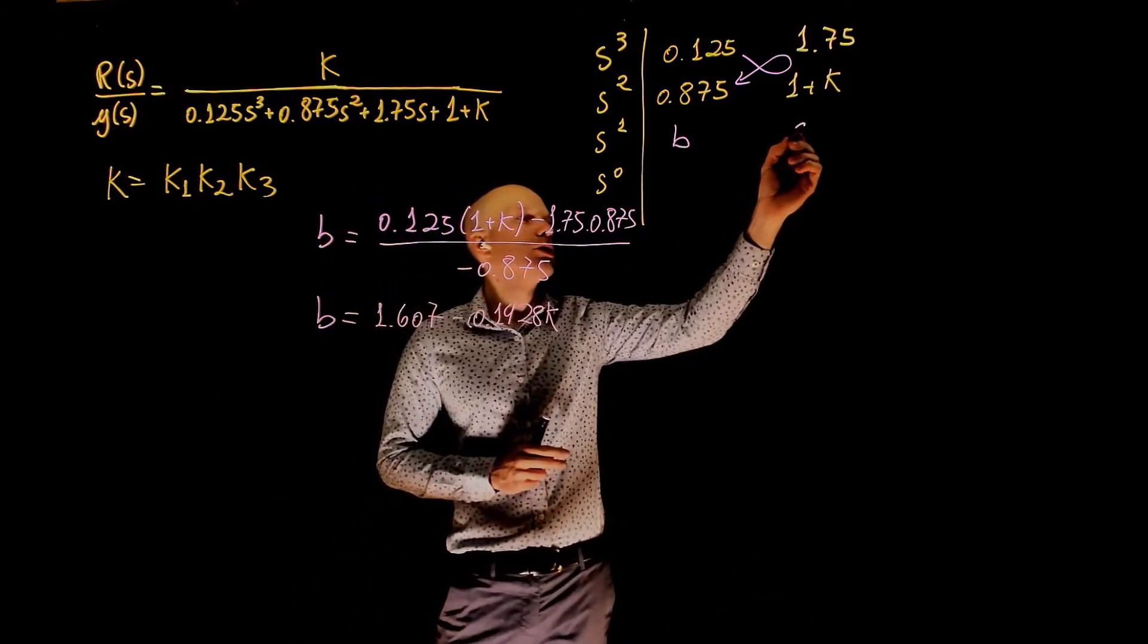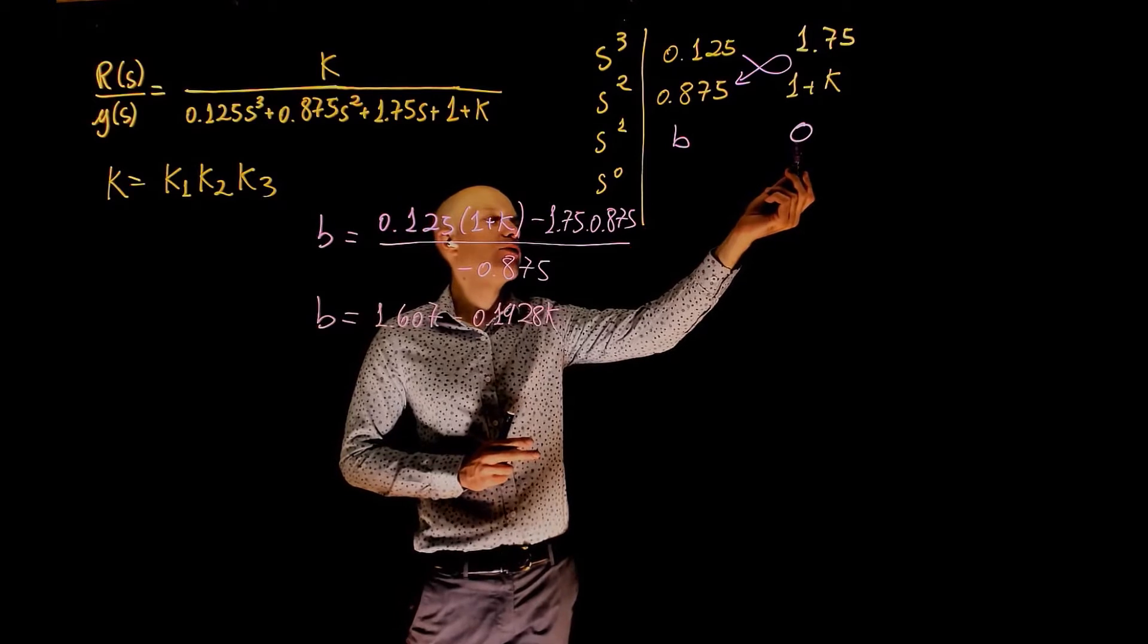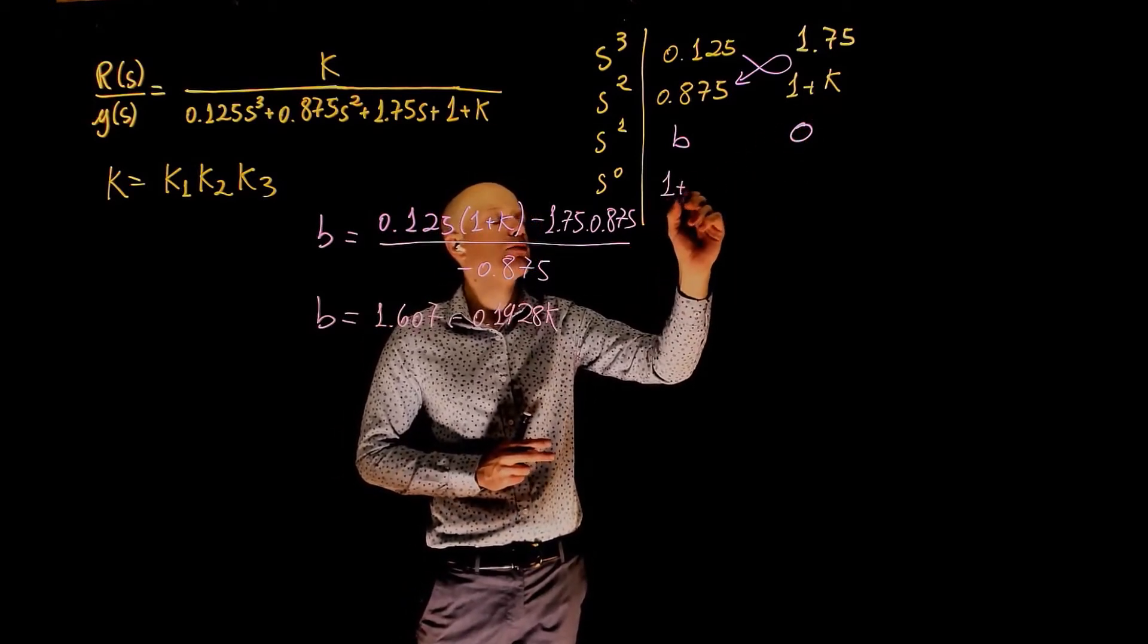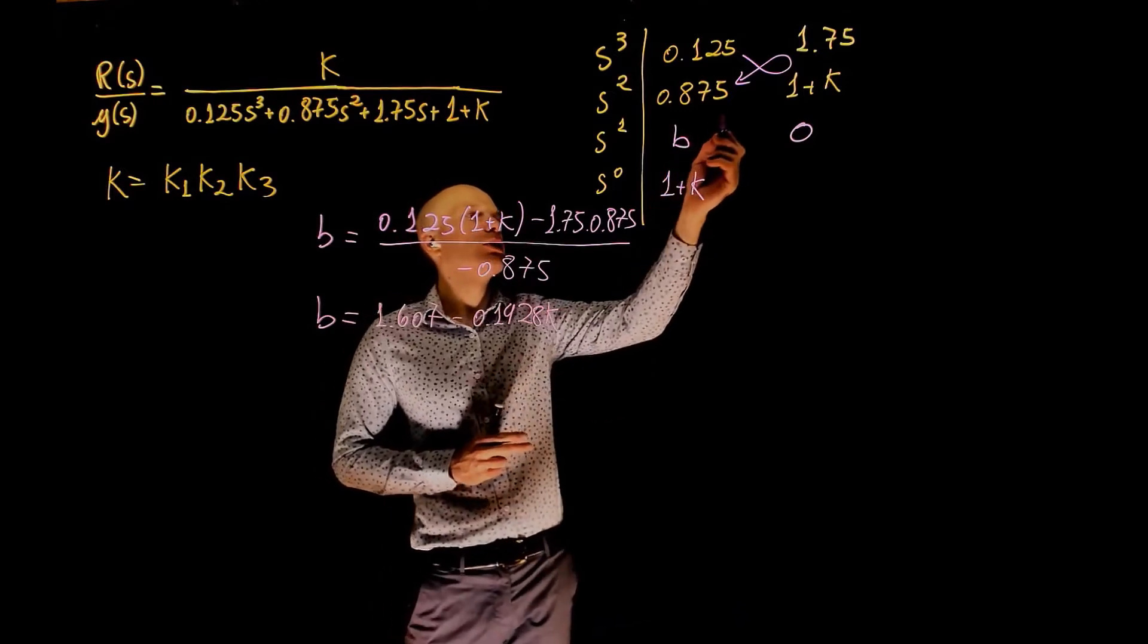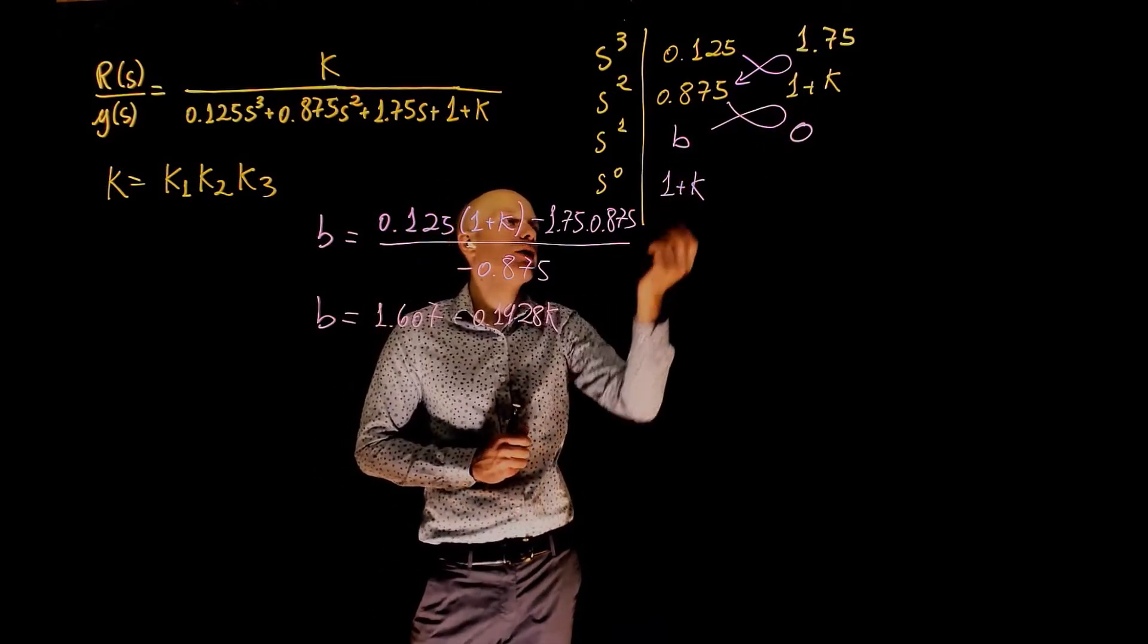Our next cell here is 0. And as you know, now because you have a 0, the number here is the one just above 0, 1 plus k. Or 0.875 times 0 minus 1 plus k times b divided by negative b.